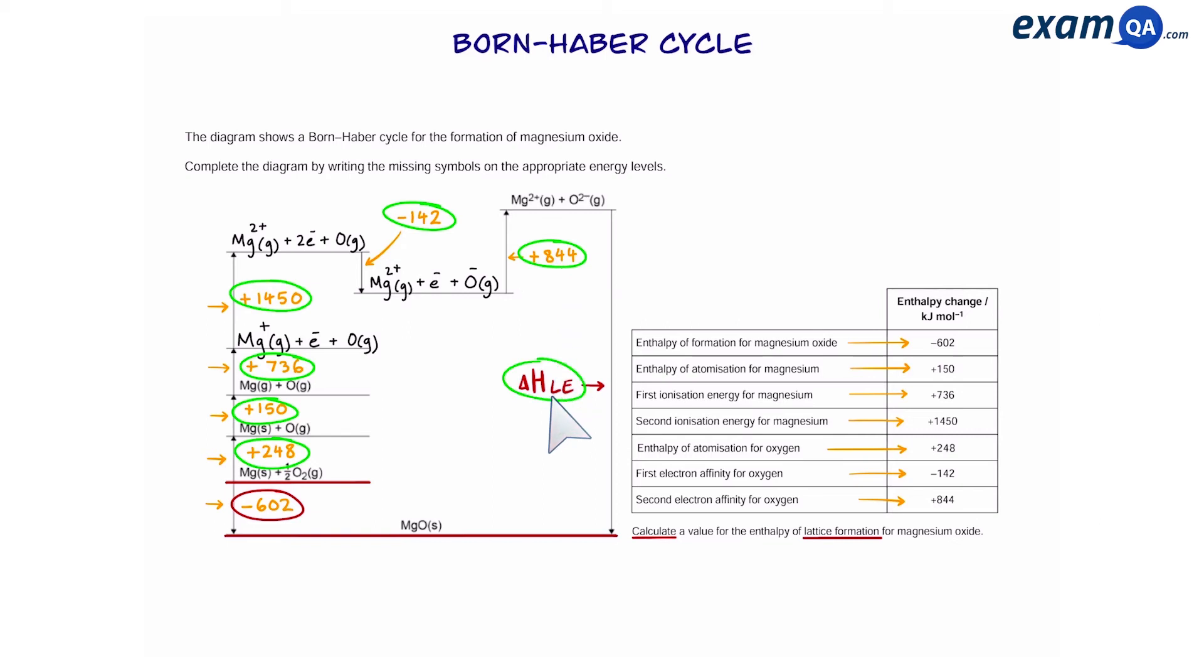And remember, because of Hess's law, it does not matter which route you take, the energy change should be the same. So, that means we can now create an equation that would look like this. Next, we're going to solve for lattice enthalpy. So, we're going to add up the numbers on the right and lattice enthalpy should be minus 3888. Again, notice how it's a negative number and the arrow is pointing down for lattice enthalpy, meaning that it is exothermic. So, that means we've done it correctly.